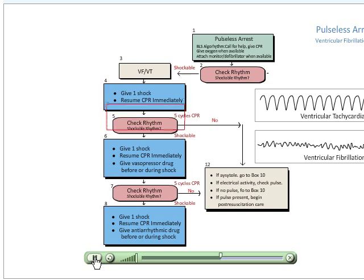If the victim is not shockable, asystole or some kind of coordinated rhythm, then we follow over to box 12.